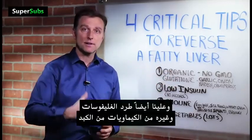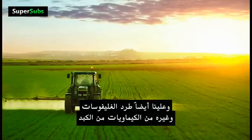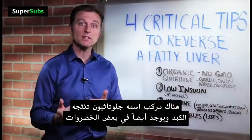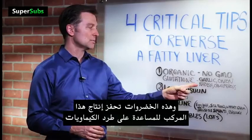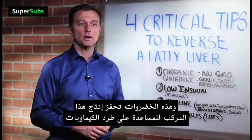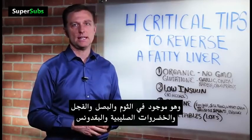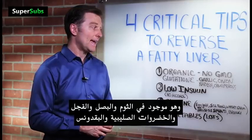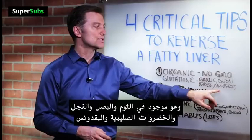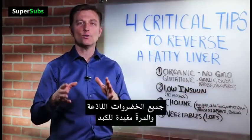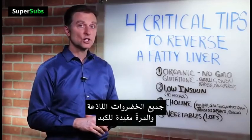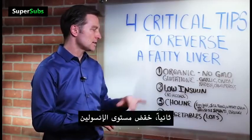We also want to detoxify the glyphosate and other chemicals from the liver. There's a compound called glutathione that is produced by the liver and is also found in certain vegetables. These vegetables will stimulate the production of that compound to help break down the chemicals. It's a sulfur-based compound. Garlic, onion, radish, cruciferous vegetables, parsley — all those really pungent, bitter vegetables are really good for the liver — vital, in fact.